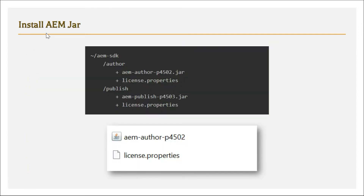How to install the AEM jar: first, go to the folder wherever you want to install this AEM author and publish instance. Go to that folder and create a root folder called AEM SDK — you can give any name you want. Then create two folders inside it: one for author and another for publish. Inside those author and publish folders, copy-paste the AEM jar and the license file.